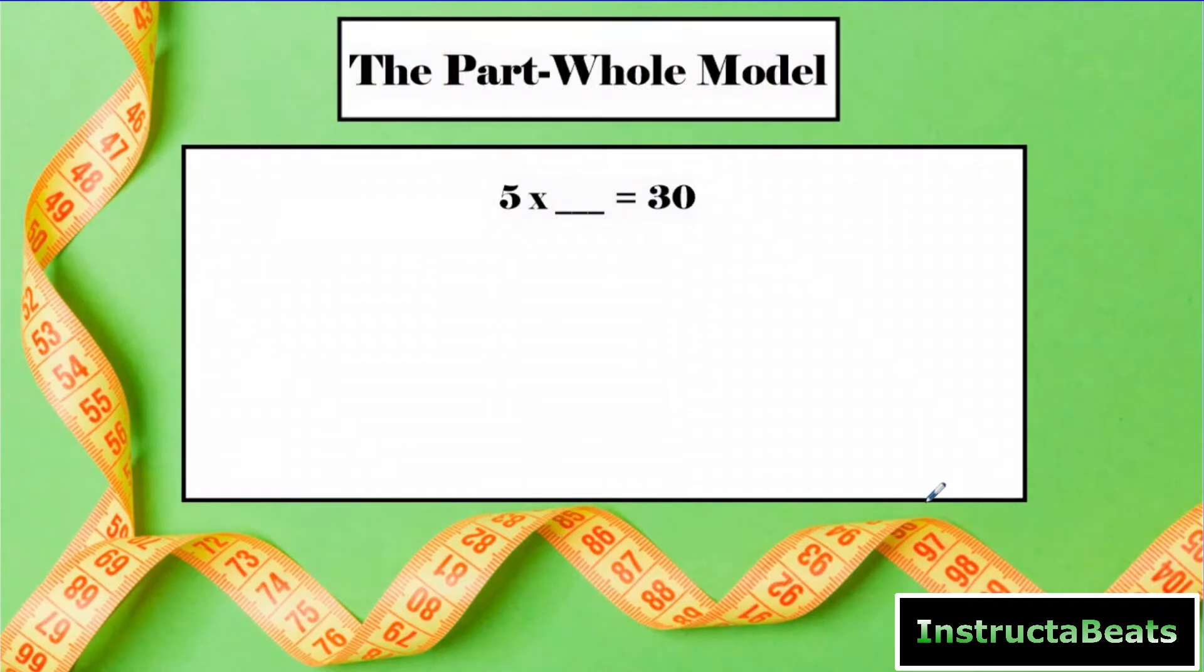So this is the same question as the last time, except now we're giving you the whole and you're trying to find how many is in each group. So if you remember, multiplication is repeated addition. You have to understand, and your students have to understand, that the multiplication sign says groups of. So if you have five groups of something, that's going to equal 30. So here you would have your part-whole model. And you're going to have five equal groups.